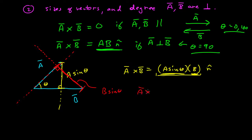A cross B can be written as B sine theta times A times the unit vector. And so A cross B can be considered the magnitude of A times the component of B perpendicular to A, then times the unit vector determined by the right-hand rule.